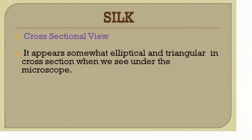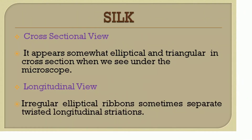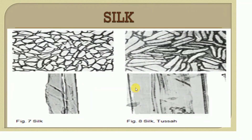Silk fiber in cross-sectional view appears somewhat elliptical and triangular in shape. In longitudinal view, it shows irregular elliptical ribbons, sometimes separate, with twisted longitudinal striations — meaning visible line marks in the vertical direction under the microscope. In the image, the triangular shape is clearly seen in cross-section, and in longitudinal view we can see striations, twisted appearance, and irregular elliptical ribbon shapes, sometimes with a rough surface.